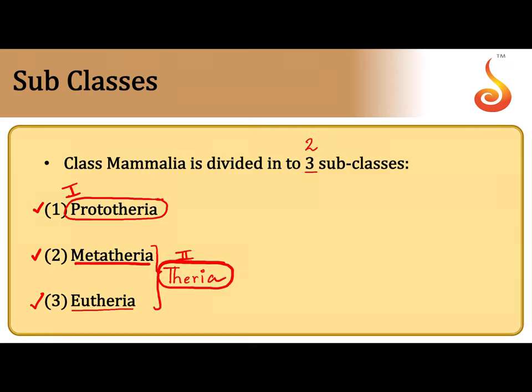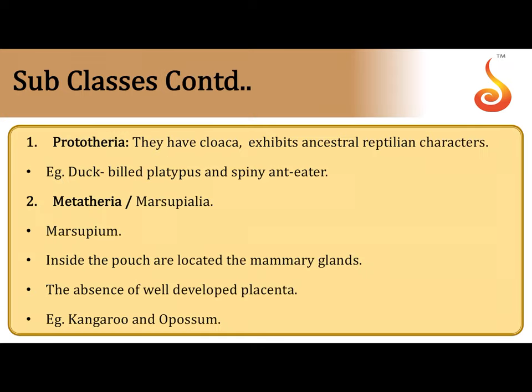Prototheria are the egg-laying mammals. They have a cloaca — a single aperture opening for the excretory, reproductive, and digestive systems — and that's why they are also called Monotremata. They exhibit some ancestral reptilian characters. Examples include the duck-billed platypus and the spiny anteater.